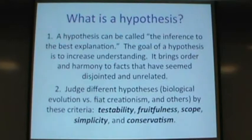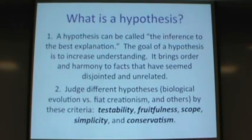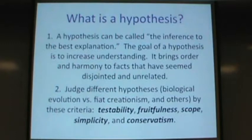Fruitfulness asks: can your hypothesis predict things? In evolution, if evolution is correct, we might expect to find a certain fossil in a certain area — and people have gone digging for those exact fossils and found them. But if you say God created things by a miracle, there's nothing you can really predict from that. Scope is also important: a hypothesis with wide scope — like evolutionary theory predicting similar organisms across the entire world — explains more than just one isolated fact.